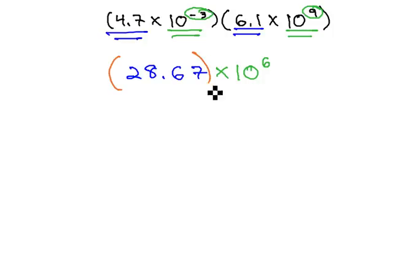What we'll do is put that 28.67 in scientific notation by moving the decimal point over once, giving us 2.867 times 10. And since it was a big number, we have a positive 1 for an exponent.